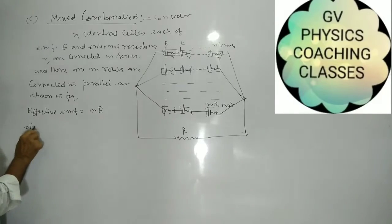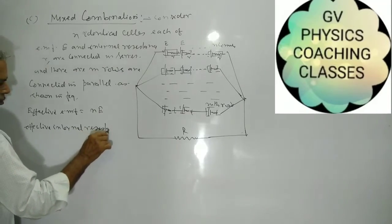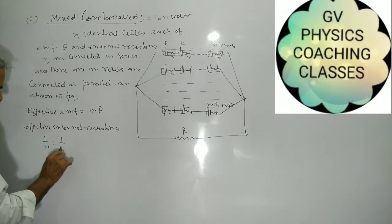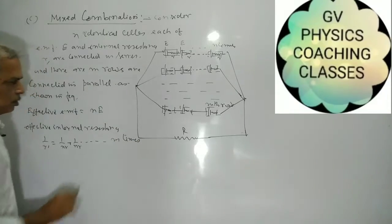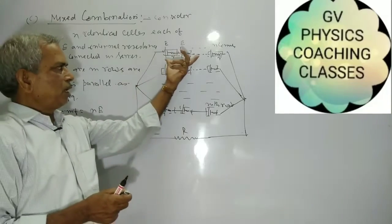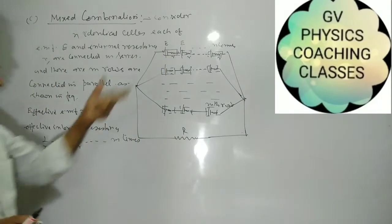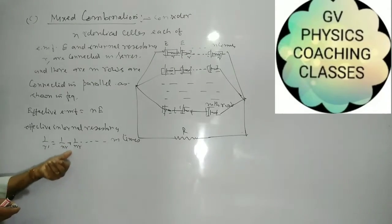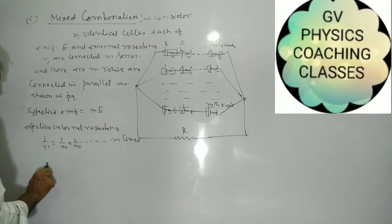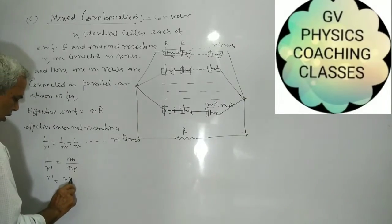For the effective internal resistance: each row has N cells, so the internal resistance of each row is Nr. These rows are connected in parallel, so 1 upon R-dash equals 1 upon Nr plus 1 upon Nr, up to M times. Hence R-dash equals Nr upon M.